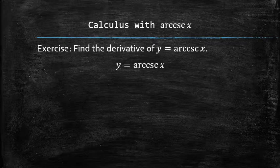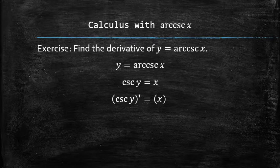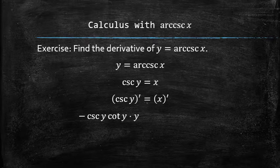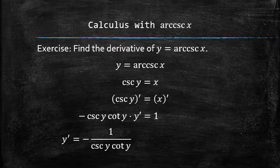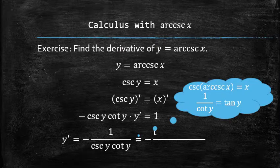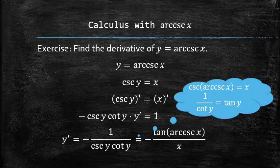First, let's apply the cosecant function to both sides and then differentiate each side. On the left side, we use the chain rule and on the right side, it is just the derivative of x. Let's divide both sides by negative cosecant y cotangent y and replace y with arccosecant of x.